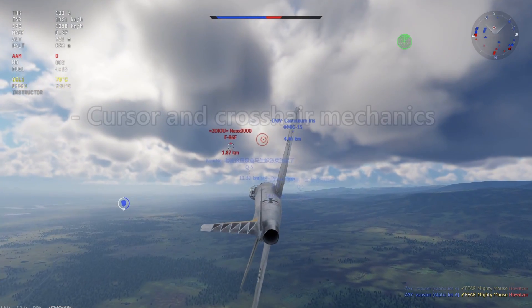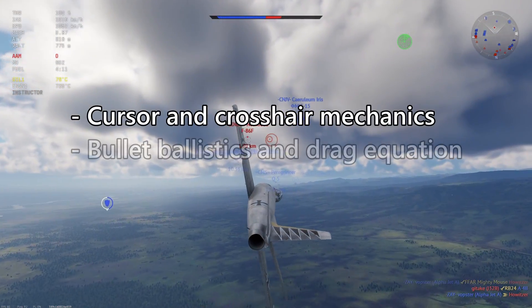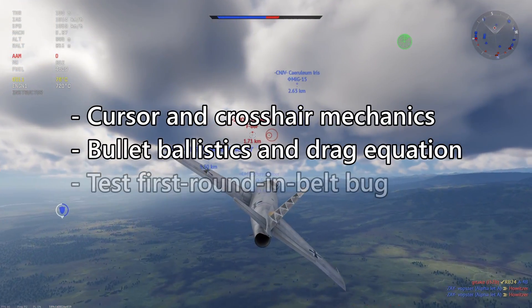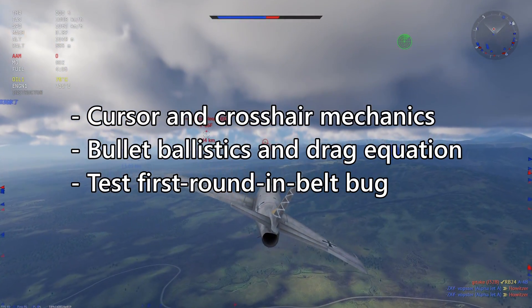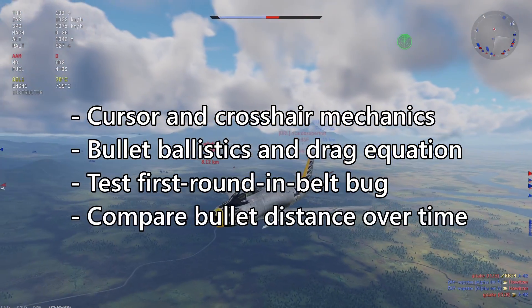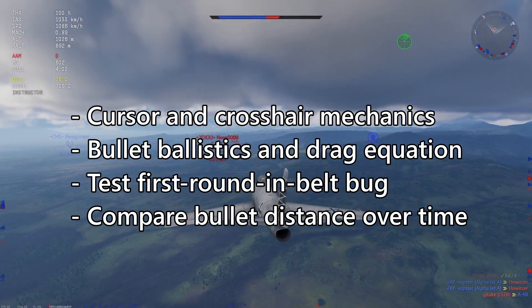In this video, I'll be explaining how the crosshair and gun aiming works, how ballistics are calculated, and then I'll be testing an alleged bug that exists with selecting belts. And then in the end, I'll be doing a comparison between some of the common belts found on World War II aircraft.